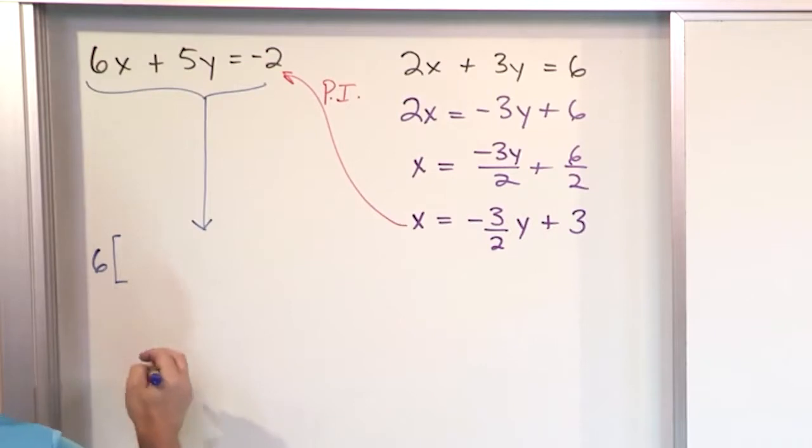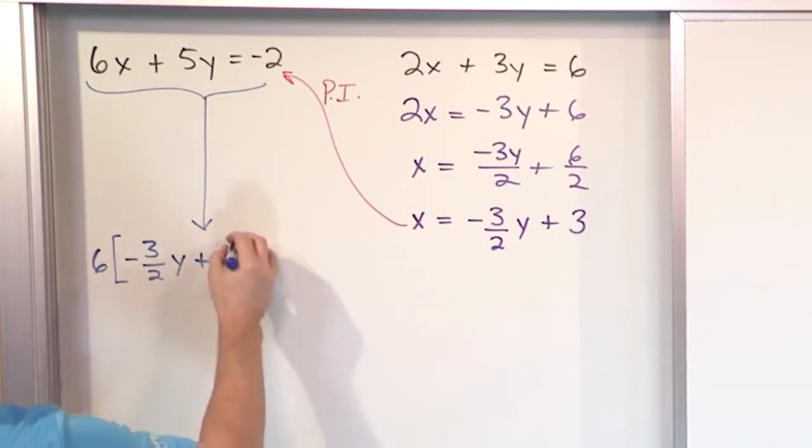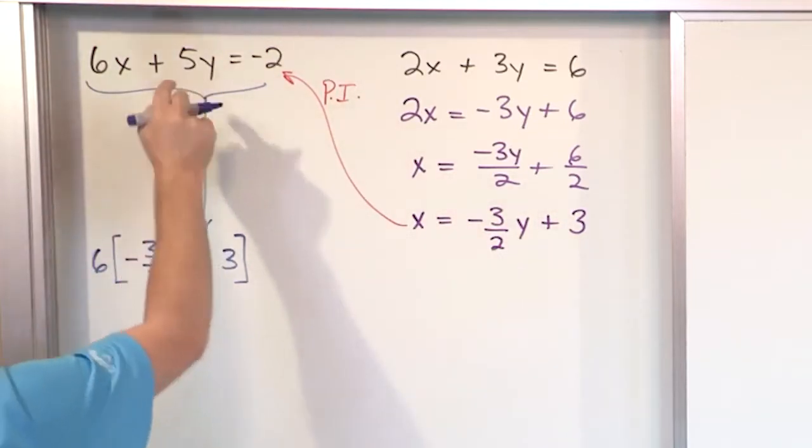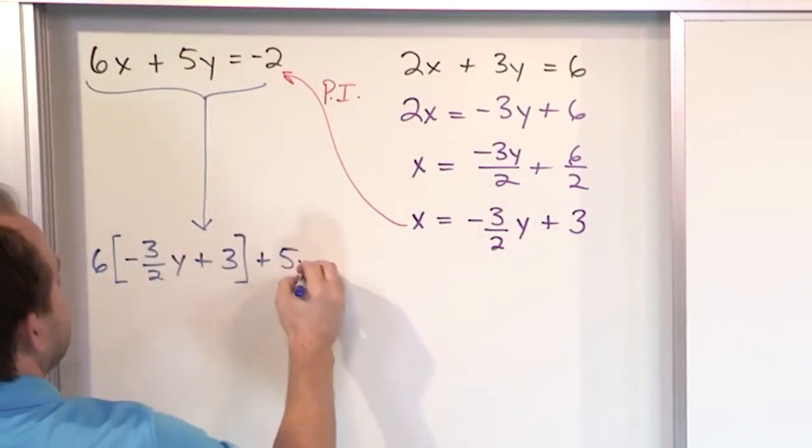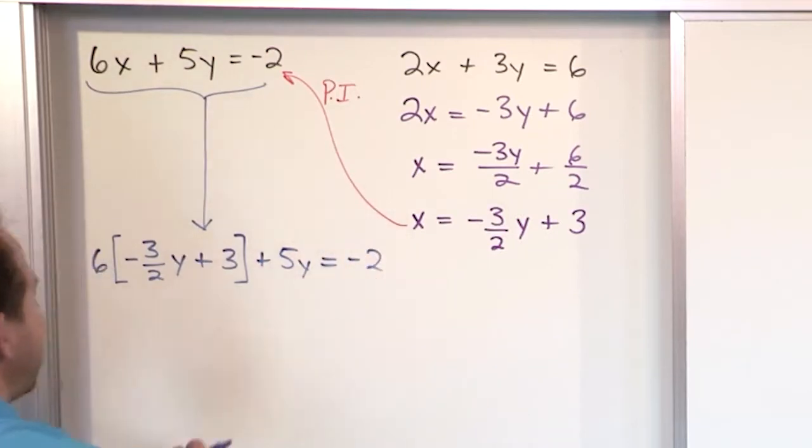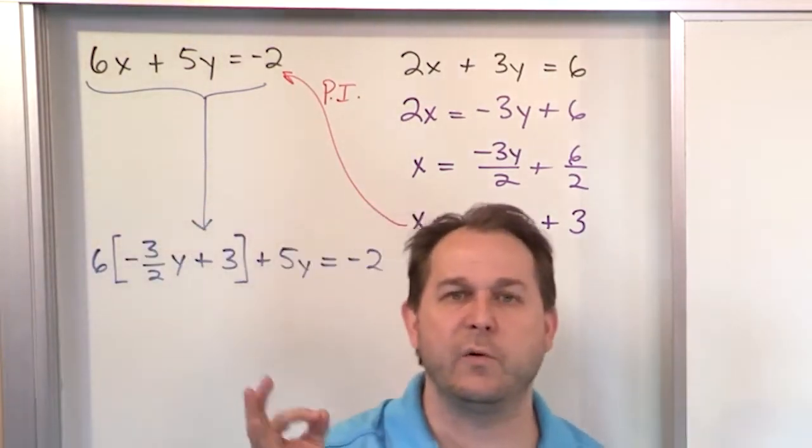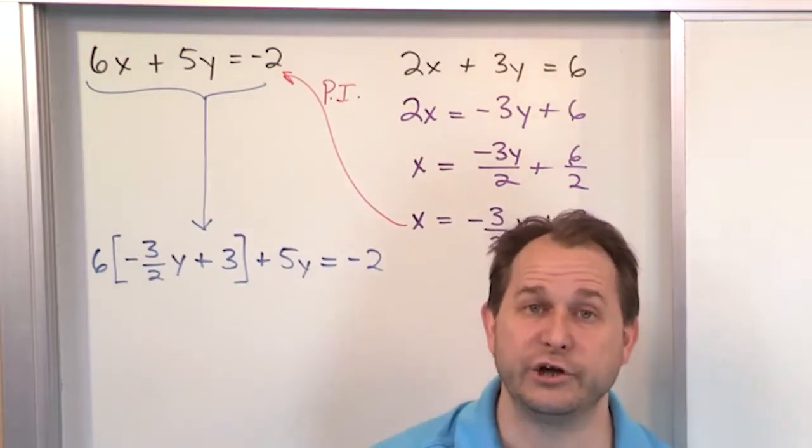So what I'm going to do is I'm going to continue this down below and say that it's going to be 6 times x. But now I know that x is equal to all this stuff. So to keep it straight, you need to put it in parentheses. Or sometimes I like to use brackets just to really make it stand out. But parentheses or brackets, either one is the same thing. So here is 6 times x where x is now known to be this. And then I have plus the 5y equals negative 2. Now, I know it looks ugly, but notice everything is a number except for y. And then everything else is a number except for y. So I have a single equation here to solve with a single unknown.